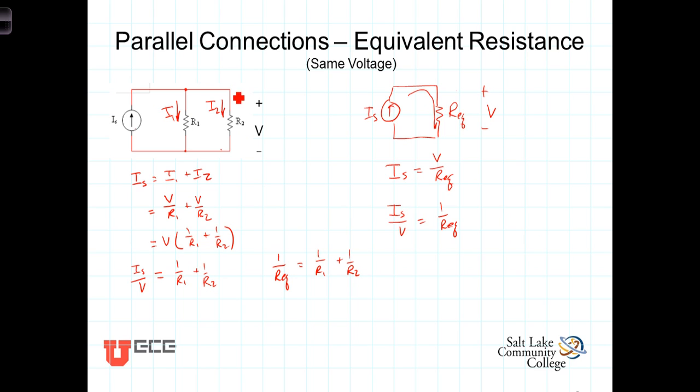It's pretty easy to see that if we had more than two resistors in parallel, it would simply continue to add 1 over R terms for as many resistors as we had in parallel.